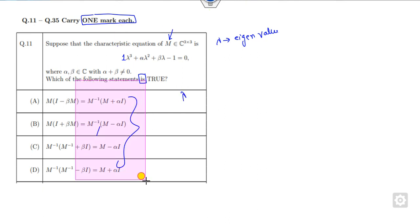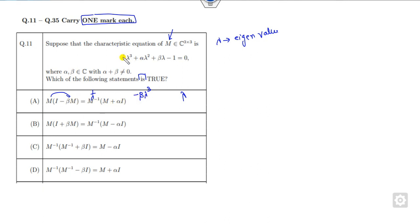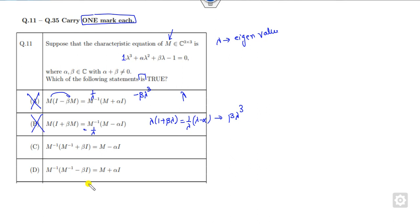We will check which option has coefficient of lambda cubed equal to 1. If you multiply the terms, the first option gives minus lambda beta times lambda cubed, but we need the coefficient to be 1, so this option is cancelled. Similarly, cross-multiplying the second option gives beta times lambda cubed, which again does not have coefficient 1, so this option is also cancelled.